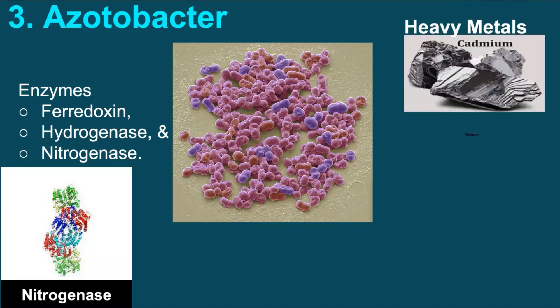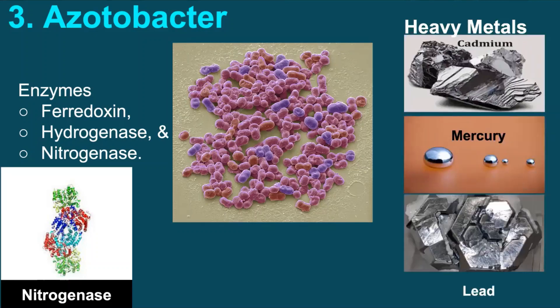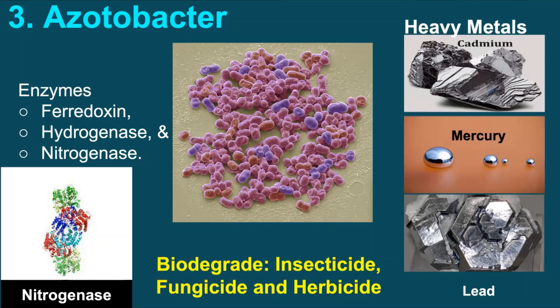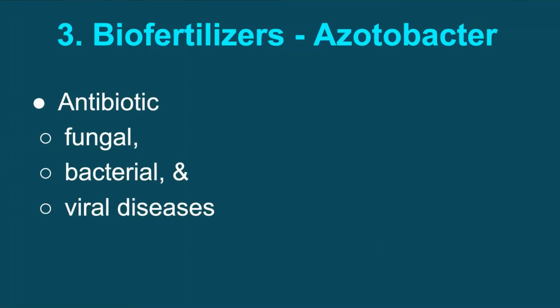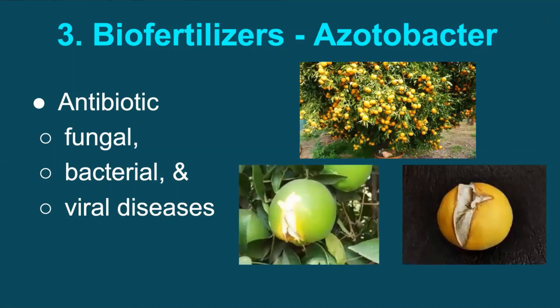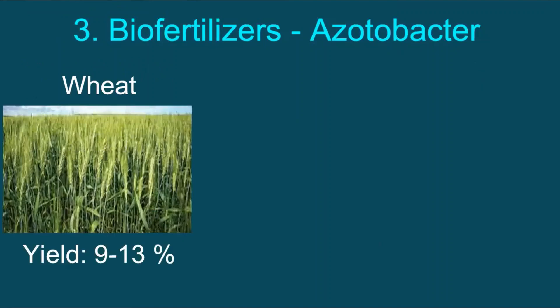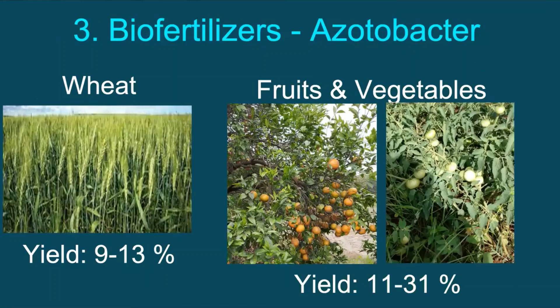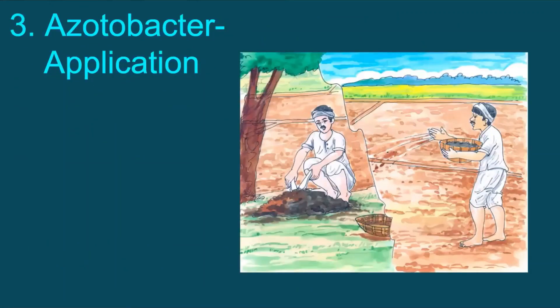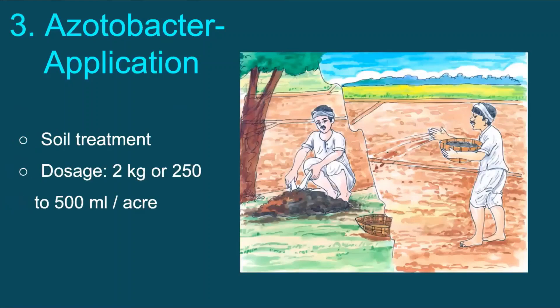Azotobacter facilitates bioremediation of soil from heavy metals such as cadmium, mercury, and lead. Some kinds of azotobacter can biodegrade the mutagenic and carcinogenic effects of some previously used insecticides, fungicides, and herbicides. Azotobacter helps in synthesizing antibiotic substances which control or suppress various diseases caused by fungi, bacteria, and viruses. It minimizes fruit cracking, flower and fruit dropping, etc. Application of azotobacter across Indian states recorded up to 13% yield increase in wheat and up to 31% in fruits and vegetables. Azotobacter should strictly be applied only in the soil, with doses as per recommendations.